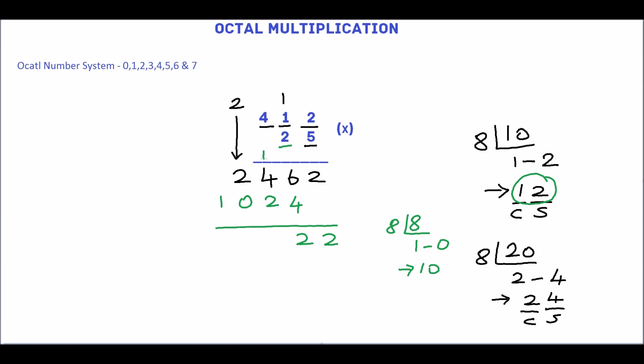1 plus 4 plus 2 is 7. 2 plus 0 is 2. 1. The answer is 1, 2, 7, 2, 2 base 8. Thank you.